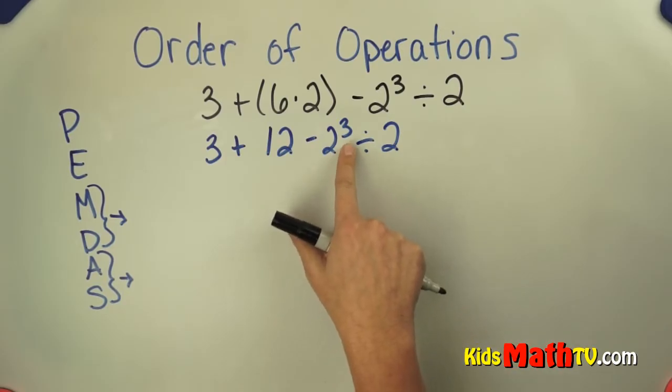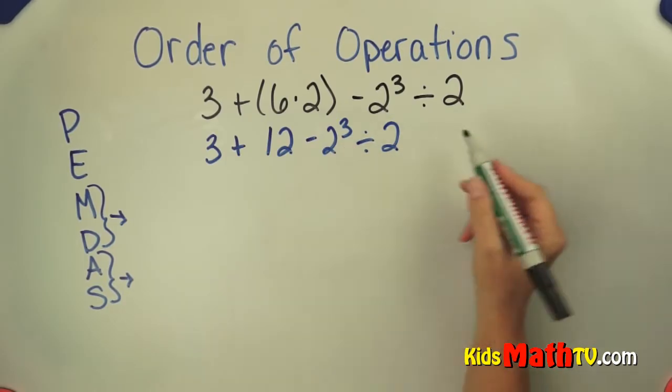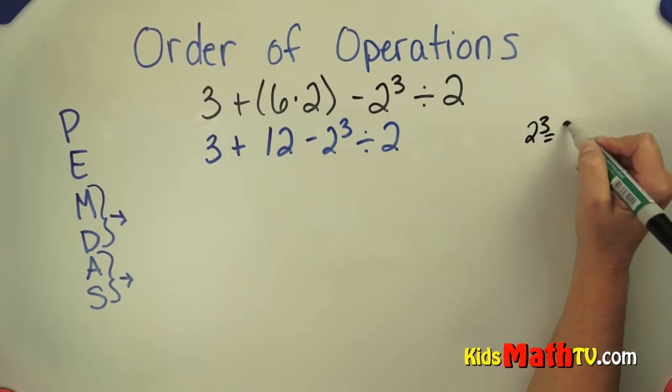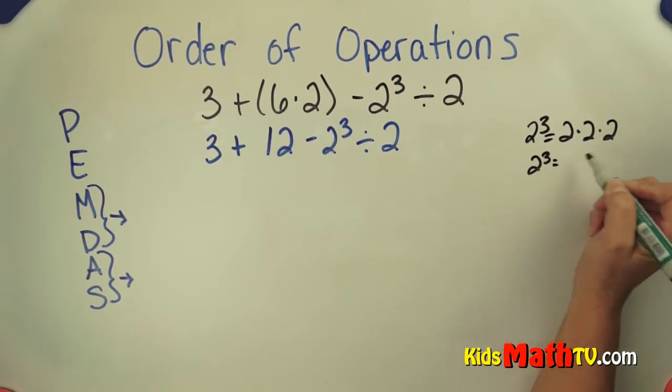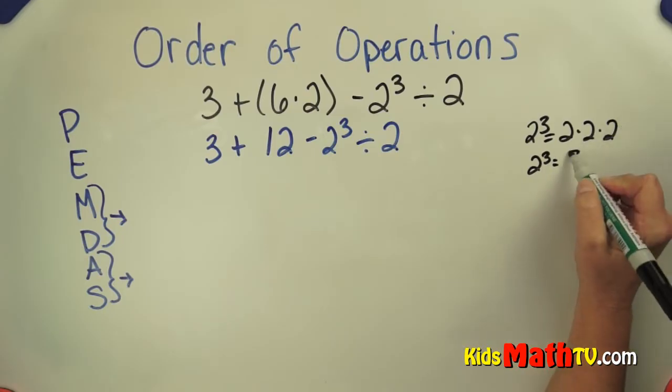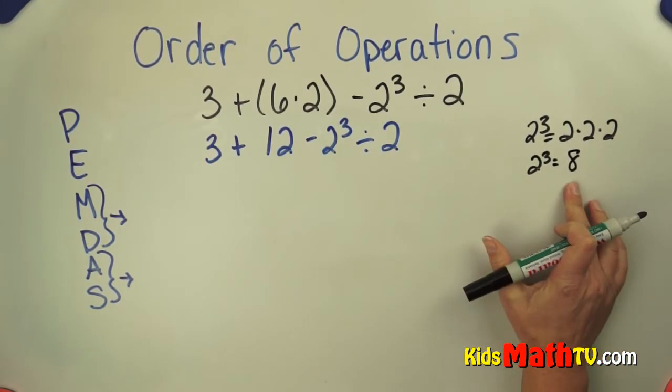2 to the third. So I'm going to evaluate 2 to the third. 2 to the third is 2 times 2 times 2. 2 times 2 is 4, and 4 times 2 is 8. So instead of 2 to the third, I have 8.